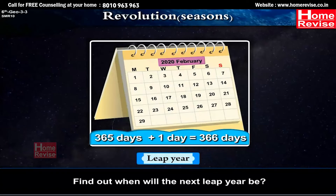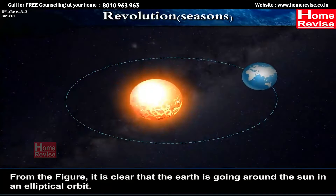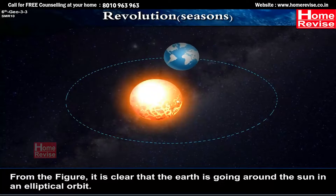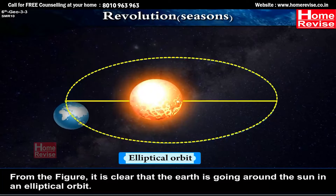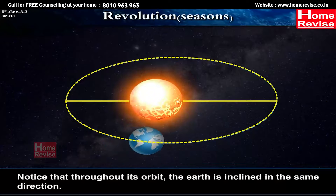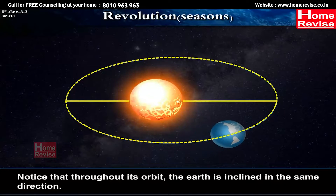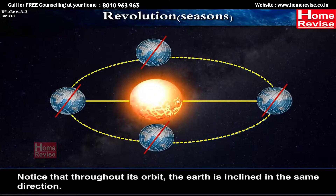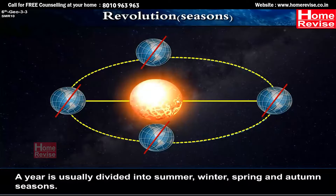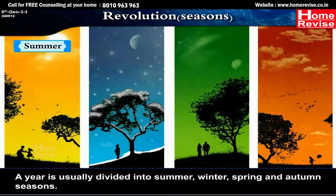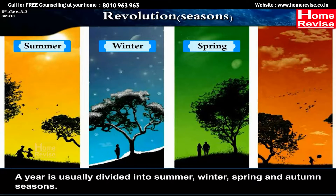Find out when will the next leap year be. From the figure, it is clear that the Earth is going around the Sun in an elliptical orbit. Notice that throughout its orbit, the Earth is inclined in the same direction. A year is usually divided into summer, winter, spring, and autumn seasons.